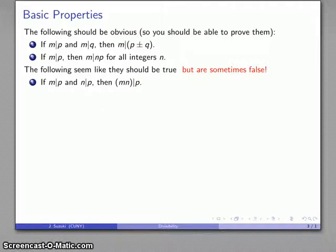one of the things that seems like it should be true: if M divides P and N divides P, so I have two different numbers that divide P, then the product M times N should divide P. This seems like something that should be true, but it's not. 6 divides 12, 12 is in fact 6 times something. 4 divides 12, 12 is 4 times something. But the product 6 times 4, 24, does not in fact divide 12. So there's a counterexample.